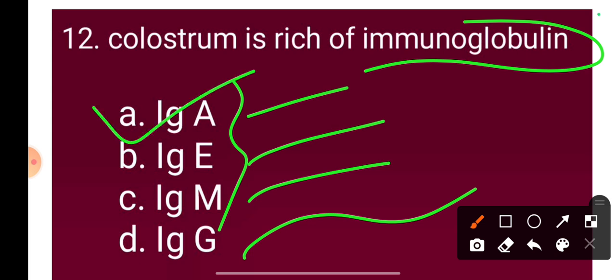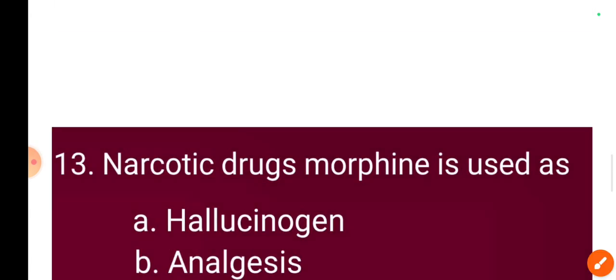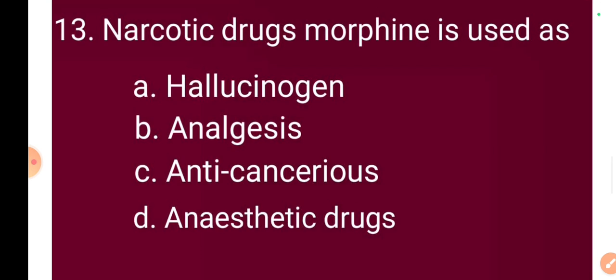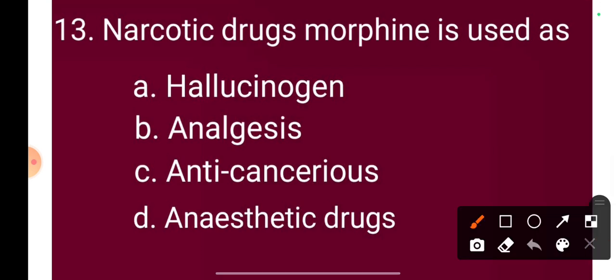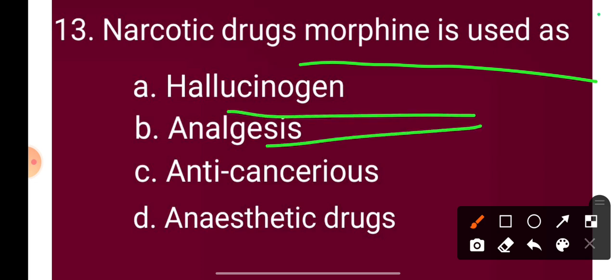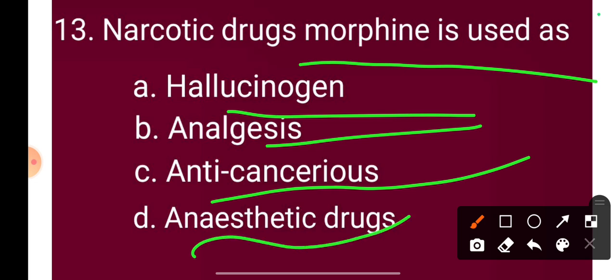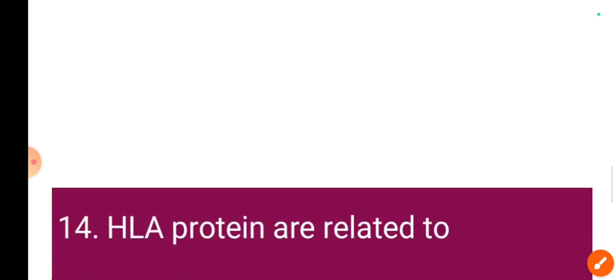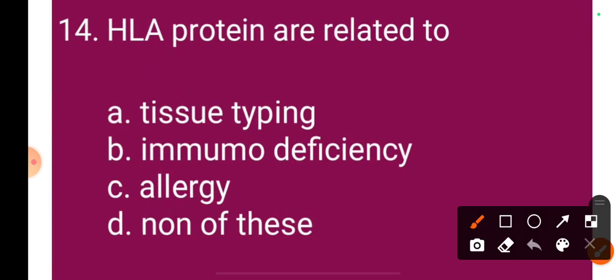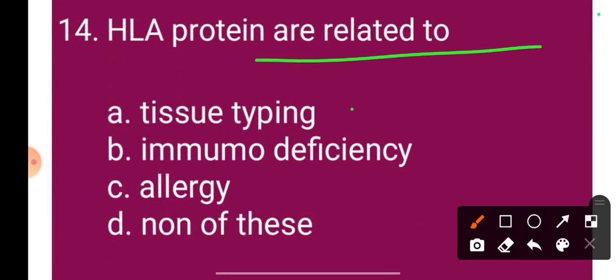Question 13: Narcotic drug morphine is used as — Option A: hallucinogen, Option B: anal disease treatment, Option C: anti-cancerous, Option D: anesthetic drug. The correct answer is Option D: morphine is used as an anesthetic drug.